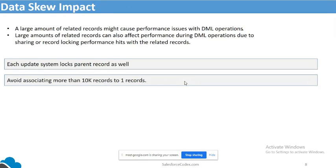We should avoid having more than 10,000 records assigned to a single parent. Instead of using one record as the parent for all unassigned child records, you can create multiple placeholder records — called parking lot records — for example, 10 or 100 Account records which can be used for unassigned child records. This way, all those records are divided into multiple accounts so that the data skew problem will not occur.